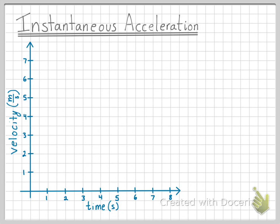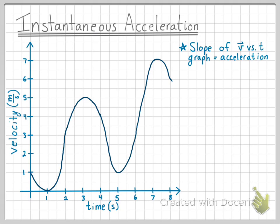These graphs are not always pretty straight lines. Instead, they can be a series of curves, something like this. In the previous video, we discussed how the slope at any given point on a velocity versus time graph is equal to the object's acceleration.